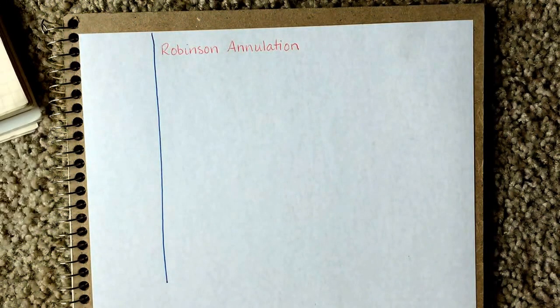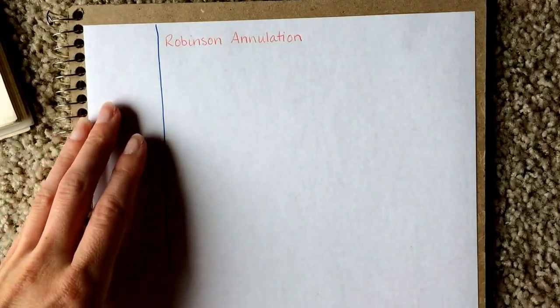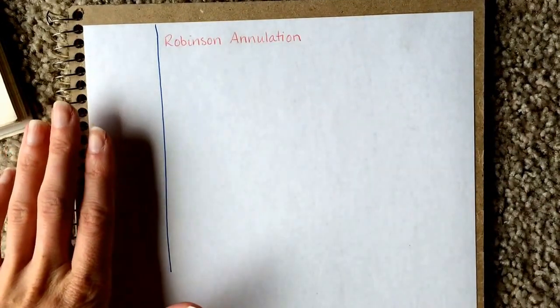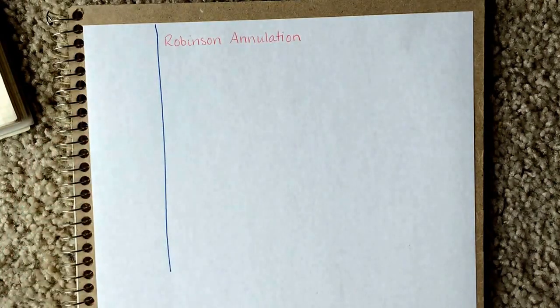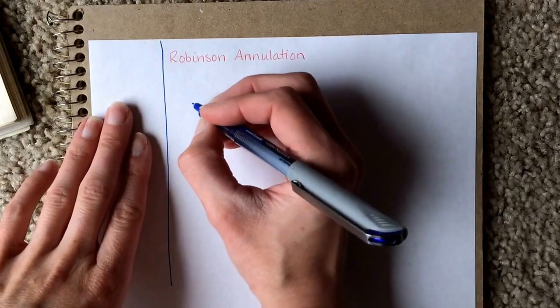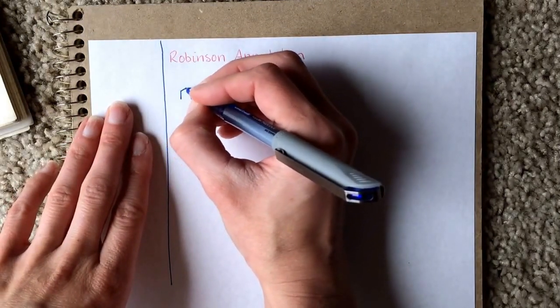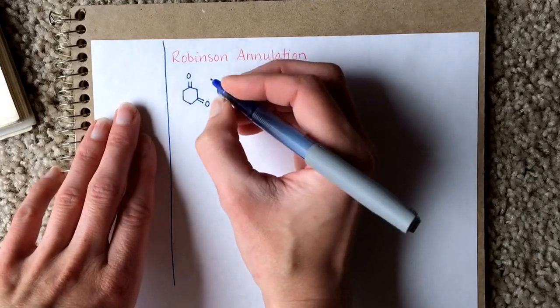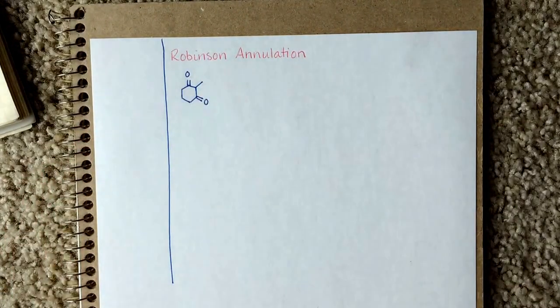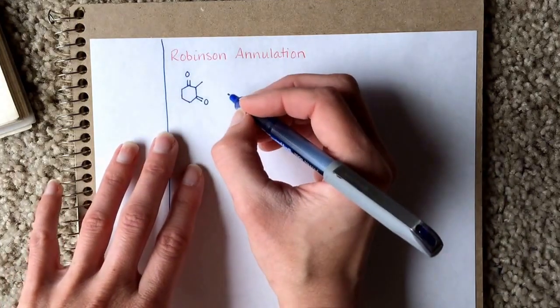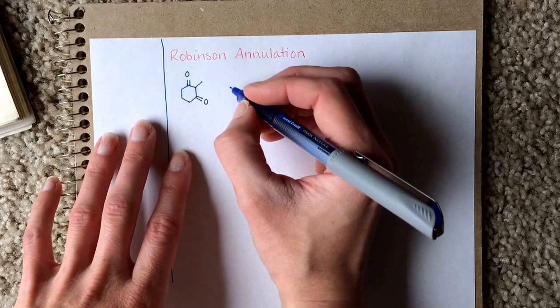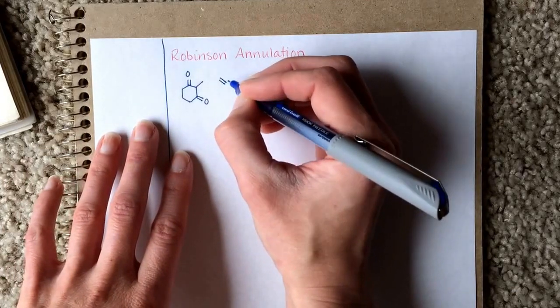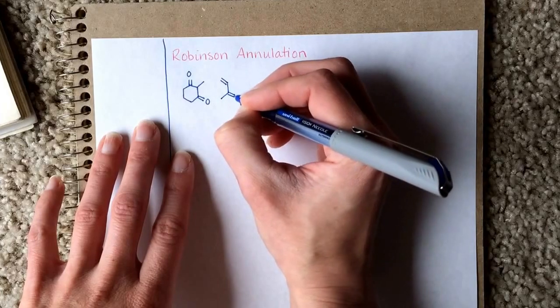The last reaction we're going to look at in this chapter is called the Robinson annulation reaction. It is a combined Michael addition with an aldol condensation reaction. We're just going to look at one specific Robinson annulation reaction and its mechanism. It's a really interesting coupling of the two reactions. The Robinson annulation is a two-step process used to make fused rings — another way to make carbon-carbon bonds.